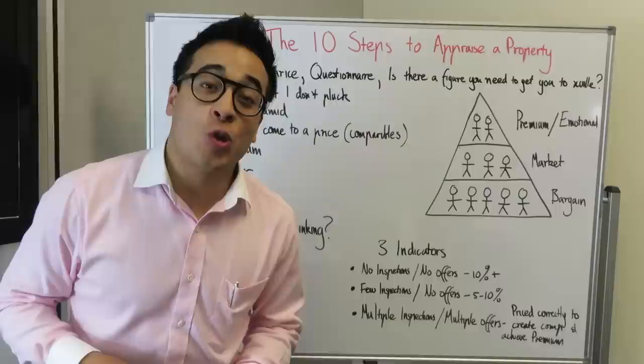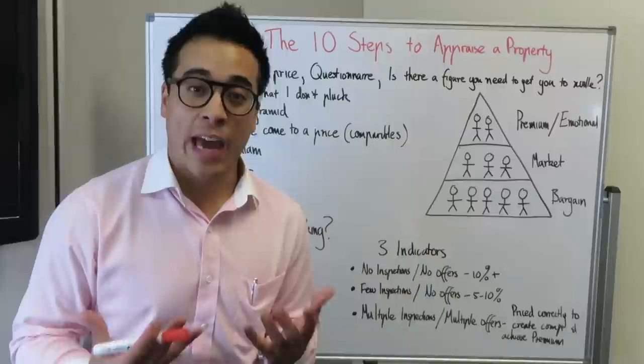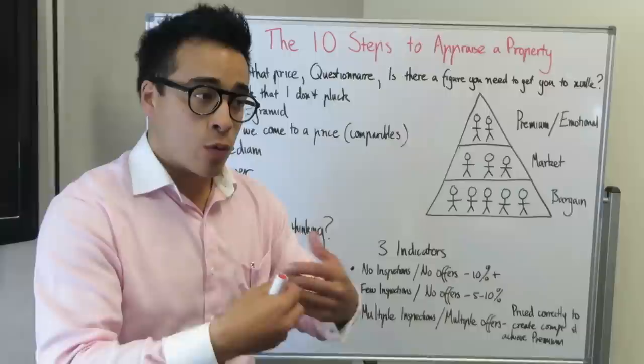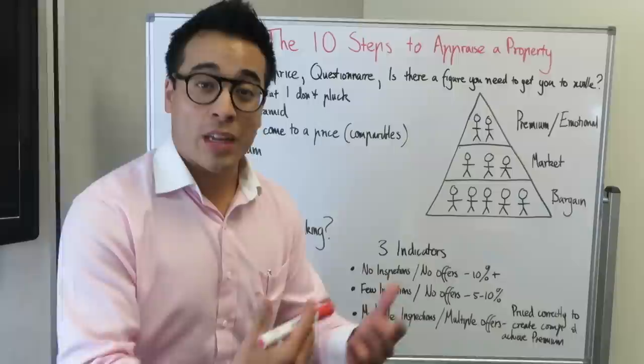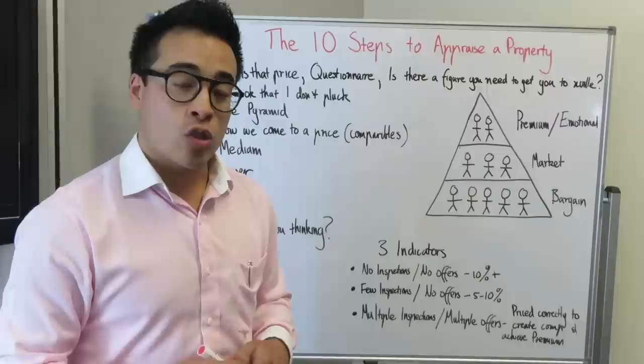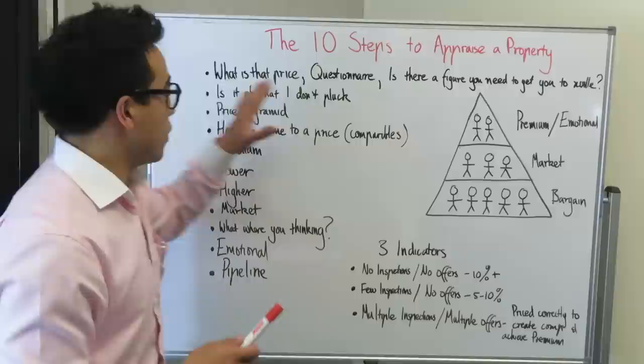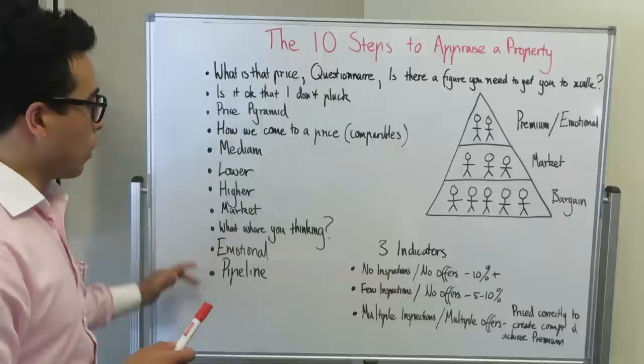Hey friends, thank you for tuning in to MrChoy.com.au. Today we are talking about how to appraise a property — how to price a house when you're at a listing presentation. The most effective way to translate your information to make sure that the vendor understands why you're pricing a house the way that you price it, to ensure that you still get the listing when you price it realistically and to show the client how it's in their best interest. So here we go — I've done the 10 steps to appraise a property.